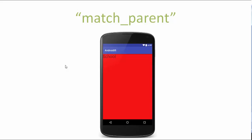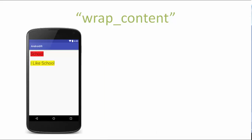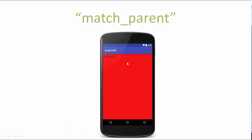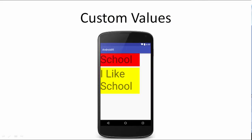Match parent — as you might have guessed by the name, the view has the same height and width as its parent. If the parent has a height of 360 dips and width of 360 dips, then the views with match parent value will have the same width and height as its parent. Since the linear layout has layout_width and layout_height set to match parent, which is the entire screen, this text view saying 'school' will cover the entire screen, and the text 'I like school' will get cut off.